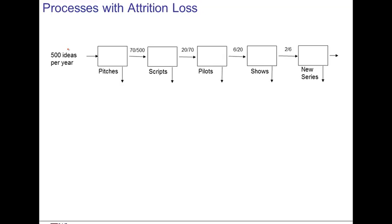A very useful application of our new way of finding the bottleneck deals with processes that have an attrition loss. Consider the following example of a television firm. The firm is looking for new series that they can air on television. For that, they consider 500 ideas every year. These ideas are pitched. 70 of these 500 are moved towards script development. These scripts then are reviewed, and the best 20 scripts are then moved into pilot production. Out of these 20 pilots, 6 are turned into new shows, and then the very best 2 are coming out as new series. The computation of finding the bottleneck in this process is very similar to what we have done.